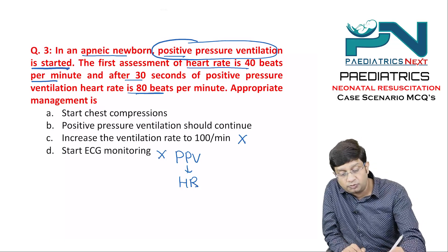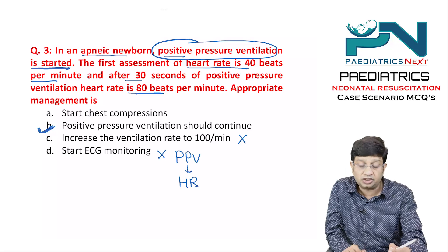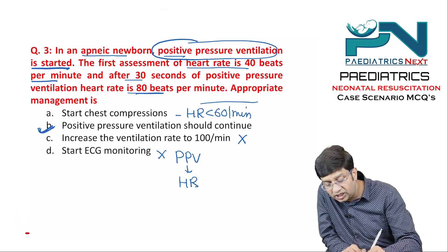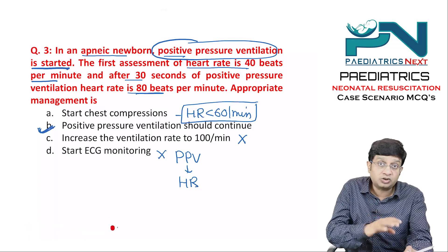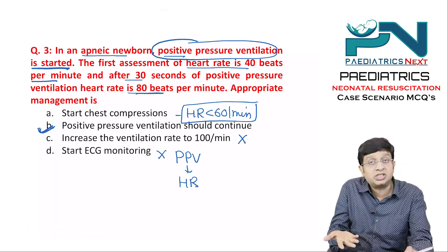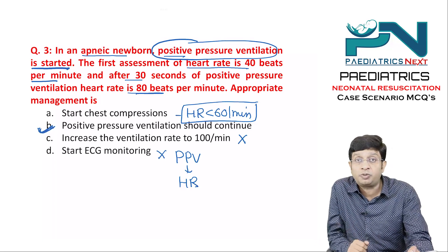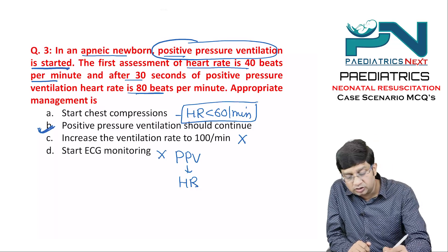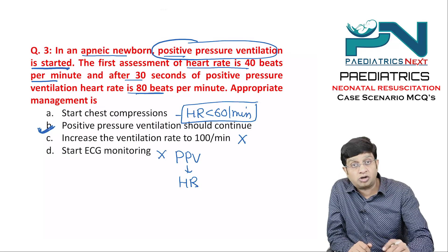The heart rate is improving, even though it is still less than 100. The indication for chest compressions is a heart rate less than 60 per minute. Since the heart rate is improving, there is no need for unnecessary additional steps. The appropriate answer is to continue positive pressure ventilation and monitor the heart rate.